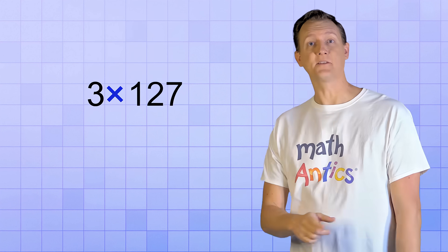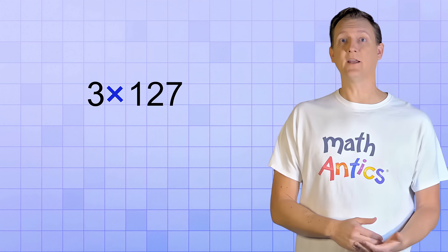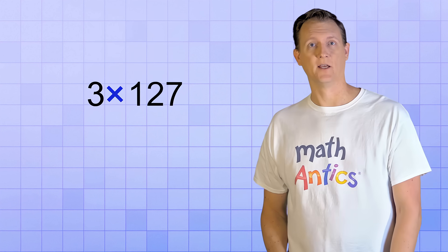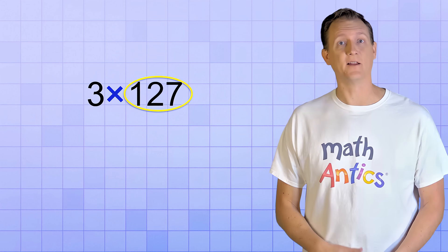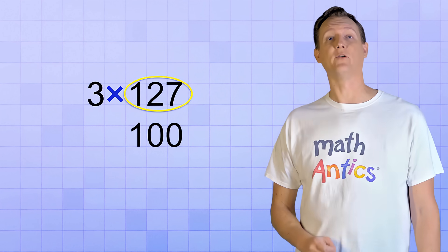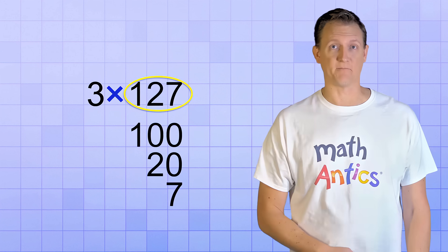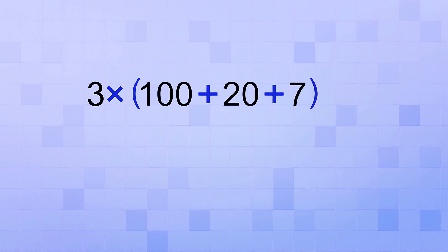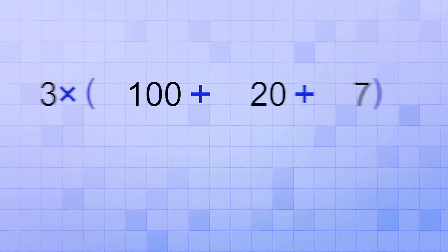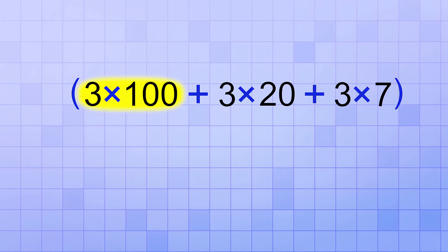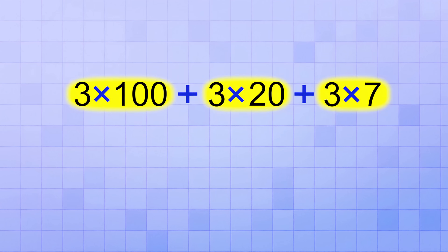Want to see another example? Let's apply that same idea to this multiplication problem. 3 times 127. But instead of 127, let's change that into the group 100 plus 20 plus 7. We need to multiply that by 3 and the Distributive Property lets us distribute that multiplication to each member of the group. 3 times 100 plus 3 times 20 plus 3 times 7.